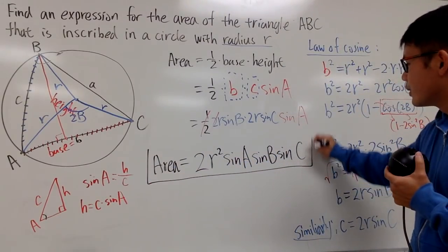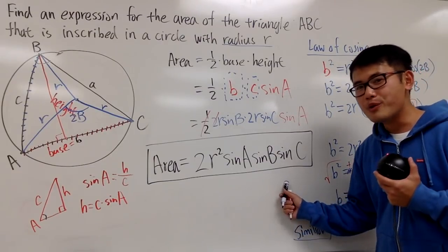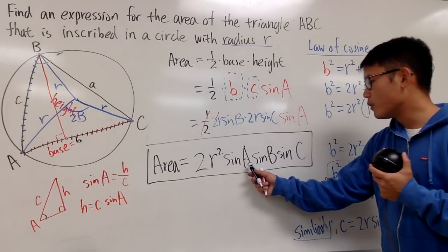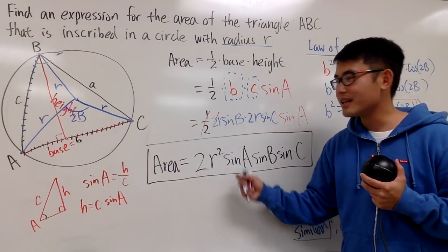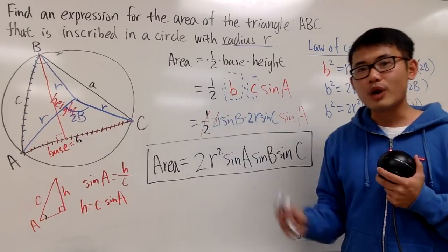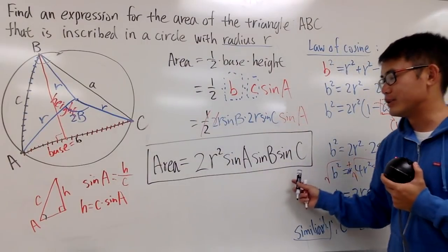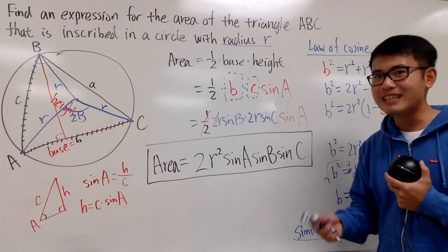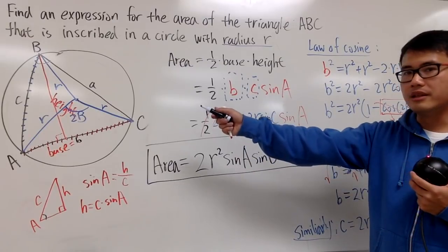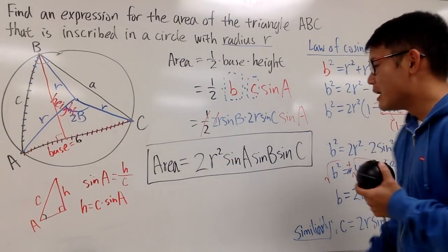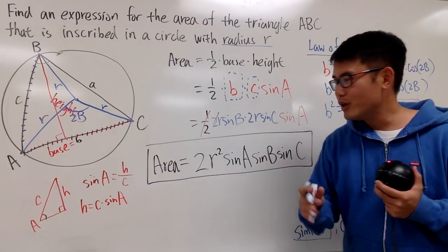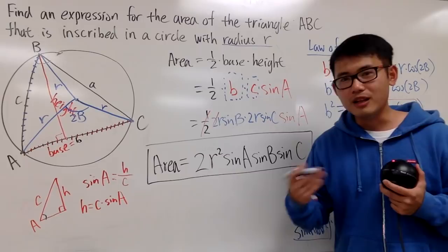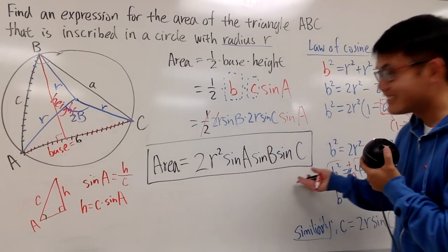So this is really cool: when you are given the radius and you know all the angles, you can calculate the area of the triangle as 2R²·sin A·sin B·sin C. The purpose of deriving this is to argue what the maximum possible triangle inscribed in the circle can be. Check out the next video, where I'll use the Lagrange multiplier method to find that maximum.